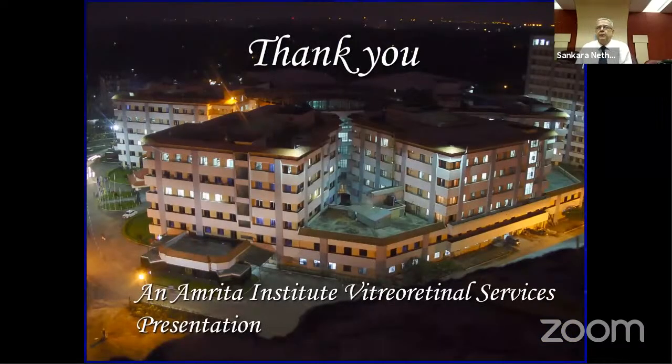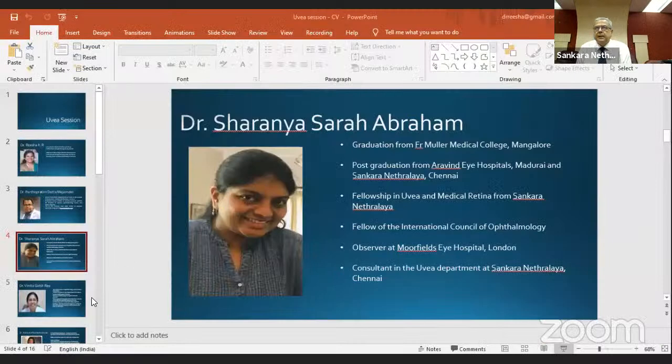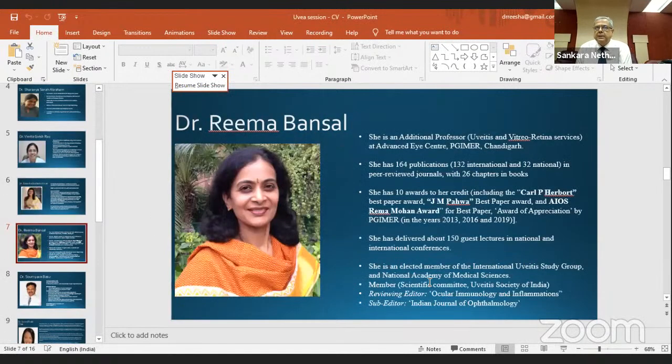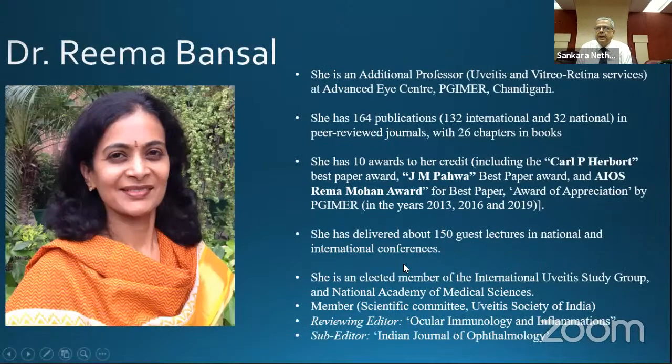In conclusion, pediatric uveitis is a challenging subspecialty requiring close cooperation between rheumatologist and ophthalmologist for accurate diagnosis and optimum treatment. Dr. Biswas emphasizes that JIA parents must understand the importance of periodic follow-up since the eye may be quiet with ongoing inflammation; methotrexate is a very good option and adalimumab is effective for JIA and intermediate uveitis in children, which has a protracted course and responds well to immunomodulatory agents.